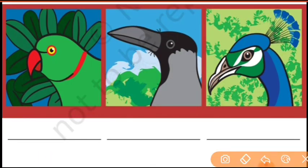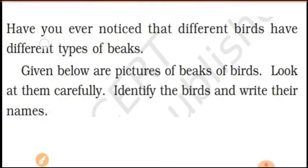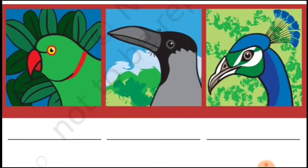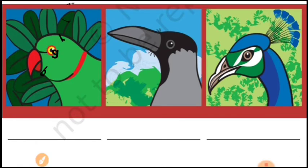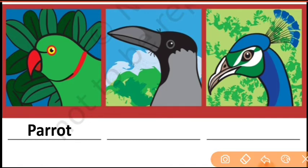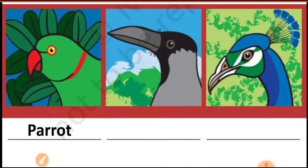It's very easy. Number one — this one is red color, green color. This is a parrot. Yes. Next, black color — yes, right answer — it is a crow.